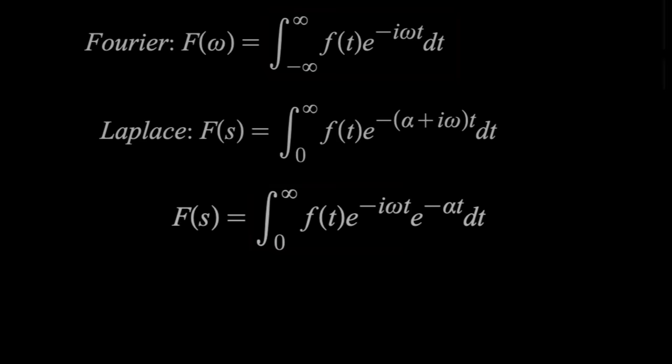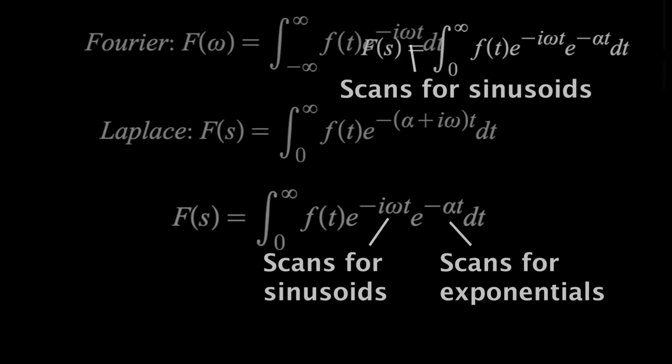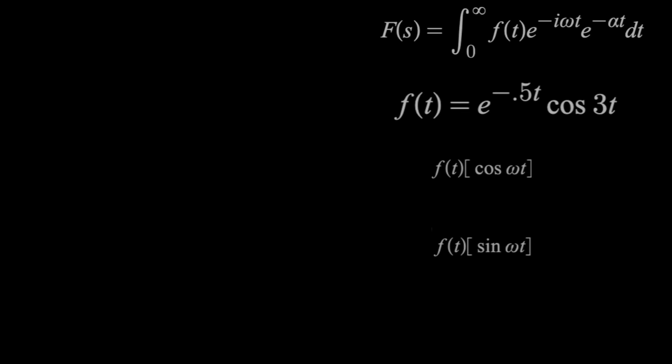So while Fourier acted as a scanner for sinusoids, Laplace scans for sinusoids and exponentials in the same way using areas. Here, let's say this is our function, starting at t equals zero. Laplace says multiply by cosine and sine omega t just like before, but also include an e to the minus alpha t, then find the area of both of those.